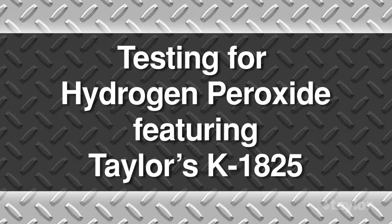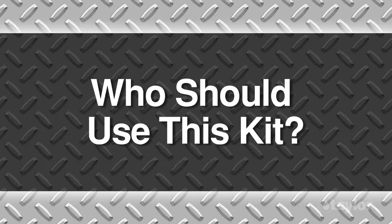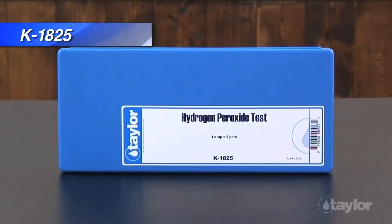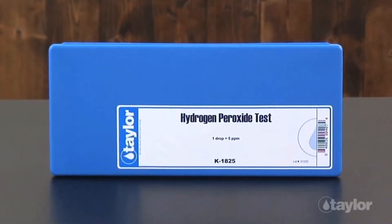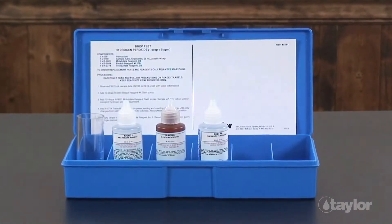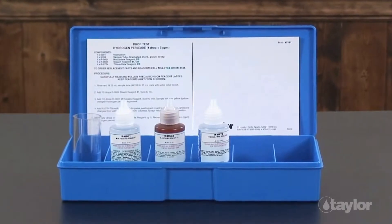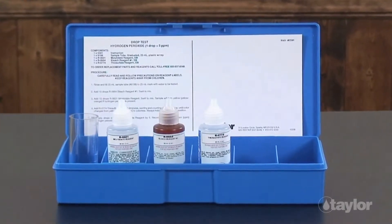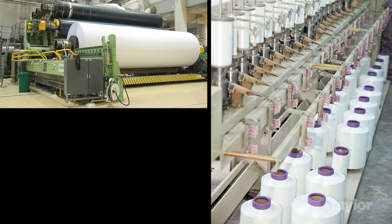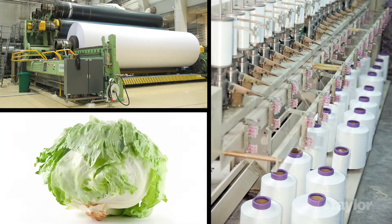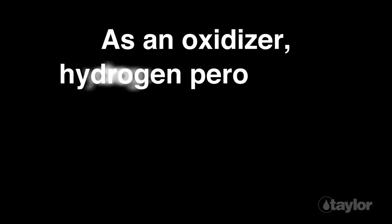Testing for hydrogen peroxide, featuring Taylor's K1825. Who should use this kit? Hydrogen peroxide (H₂O₂) is a weak acid and a strong oxidant. The largest use of hydrogen peroxide is as a delignification and bleaching agent in the pulp and paper manufacturing industry. It is also used in textiles as a bleaching agent and in food processing as an oxidizer.